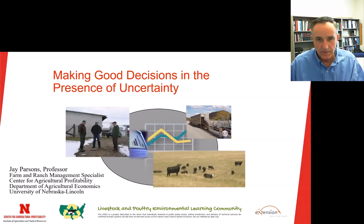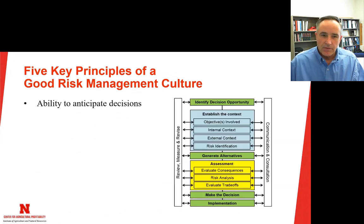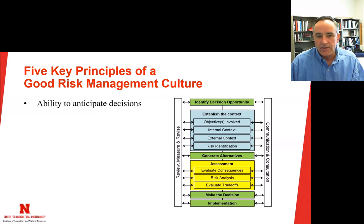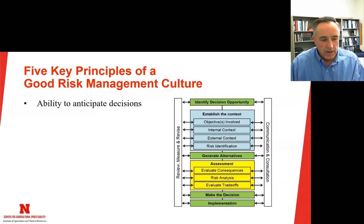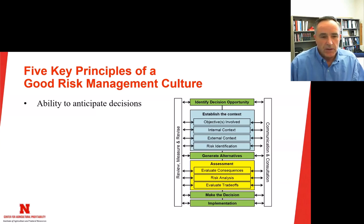I'm happy to share a few thoughts today to set up the other two speakers. First, if you're going to make good decisions in general, you need to have a good decision making process. This graphic is the process I've been teaching for the last five or six years in my advanced farm management class and also out in my extension circles when working with producers. I'll highlight the key points relevant to today, in particular the five key principles of a good risk management culture.